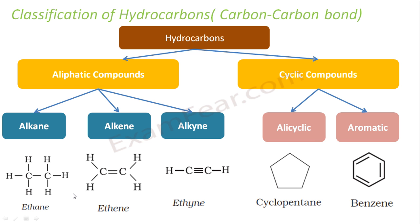Aromatic compounds have aroma and have 4n+2 pi electrons. They have more stability and resonance. Alicyclic compounds have closed rings, but their behaviour and properties are similar to aliphatic compounds. Aliphatic compounds have open-chain hydrocarbons with no rings. Alicyclic compounds have rings, but their physical properties resemble those of aliphatic compounds. Aromatic compounds have different properties.